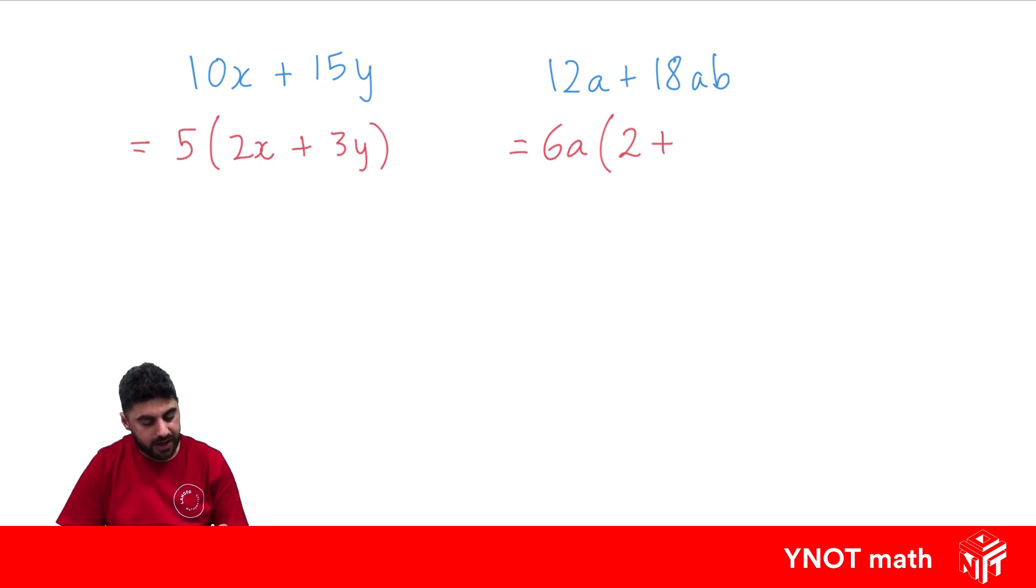We've taken out a, so a is not going to be in here, but we're going to be left with a b here. And what number do we need to multiply 6 by to get 18? That's going to be 3. And we've still got the b, because we never took it out. And that's that one factorized.